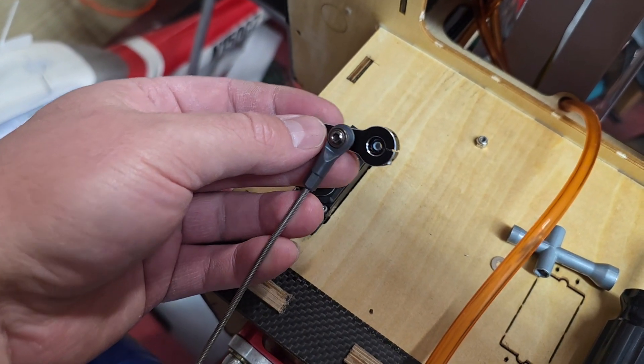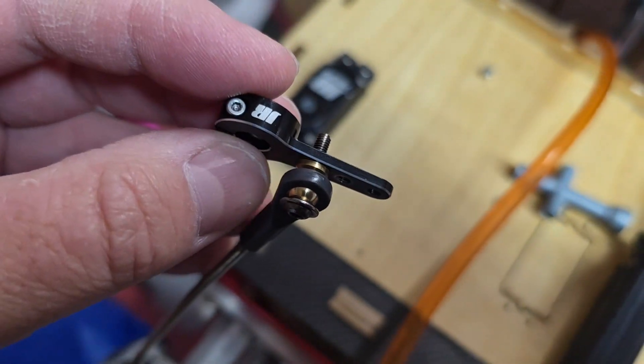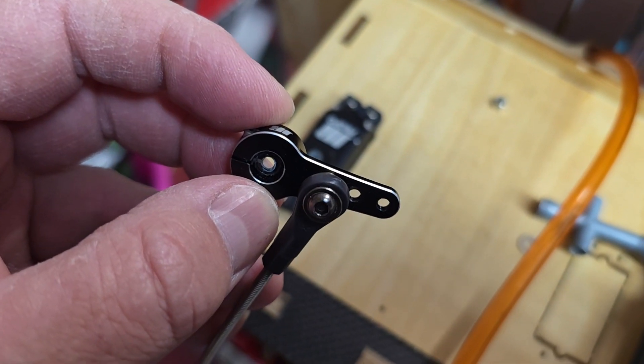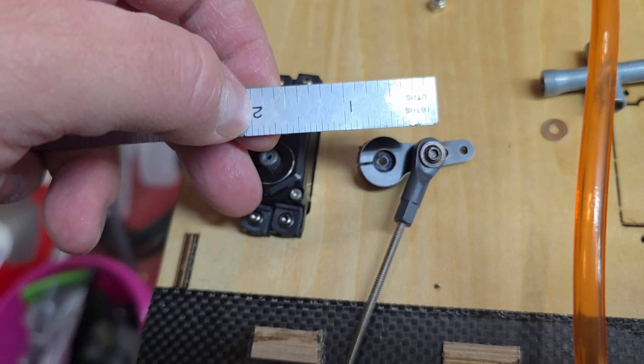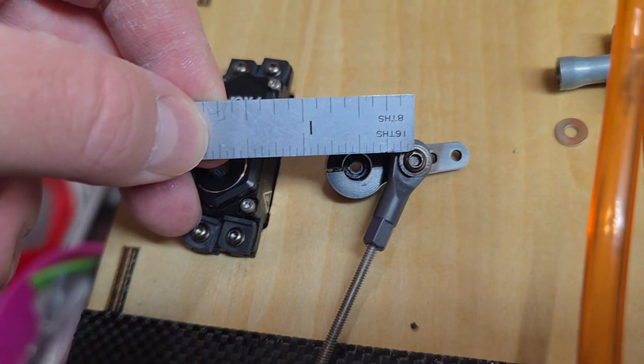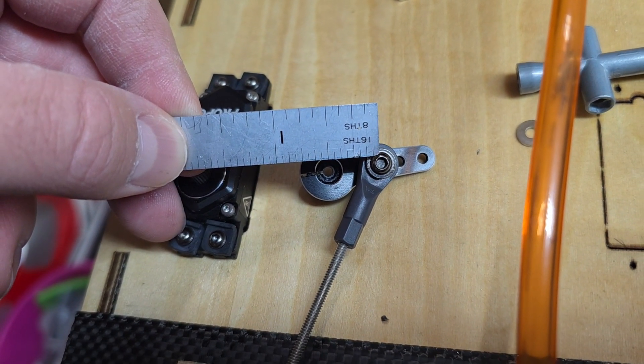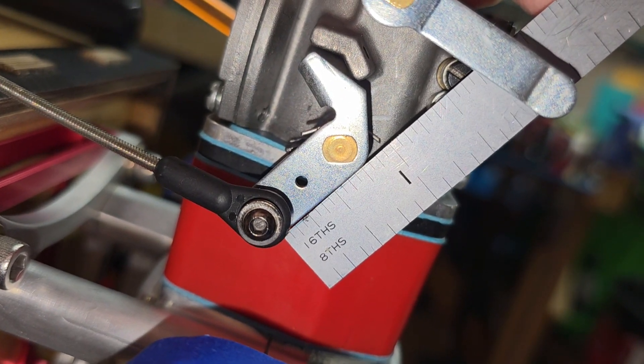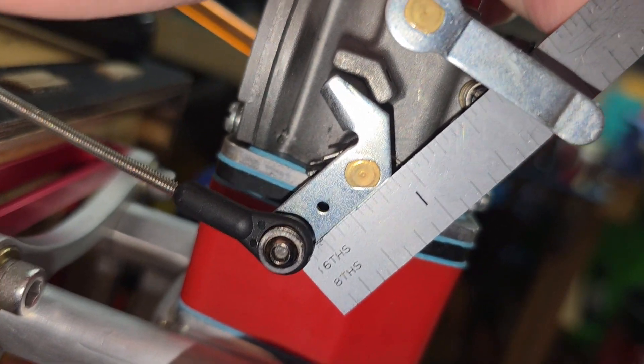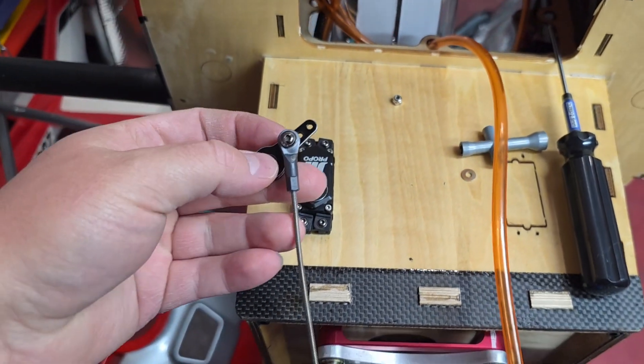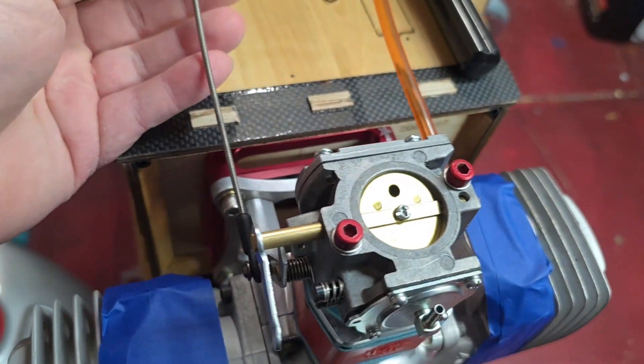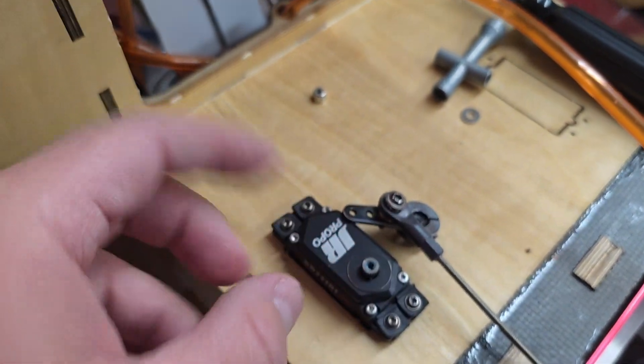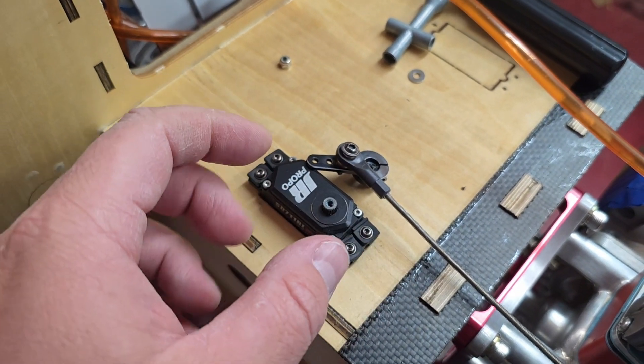The first change I did was we moved the linkage here on the servo arm to the furthest hole in, so that winds up being about half an inch out on the arm. And it might be hard to tell on the engine side here, but the carburetor arm is just under three quarters of an inch. So this is actually the most ideal kind of setup where your servo arm is actually shorter than the arm on your carburetor.